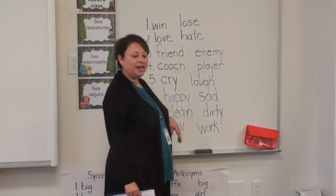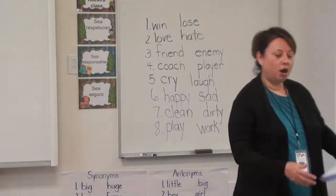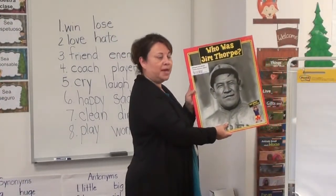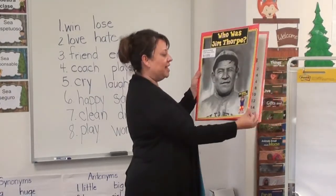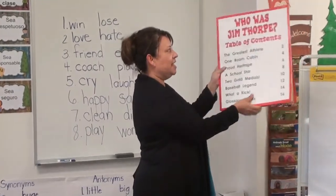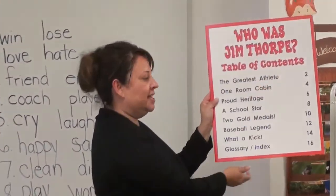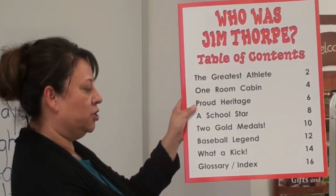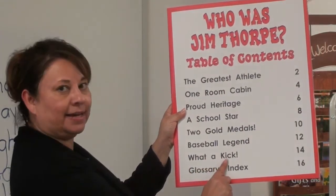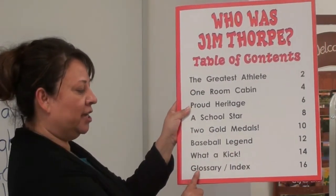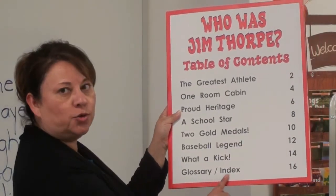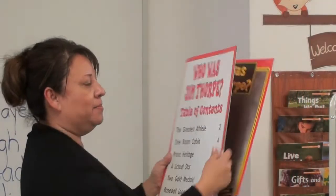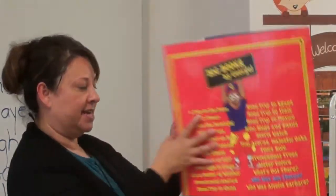So let's find out today what happens in our story of who was Jim Thorpe. I'm going to take us to the table of contents. Today we're going to look at 'What a Kick' on page 14, and then we're going to look at what a glossary and an index are on page 16.